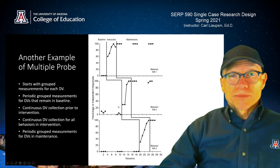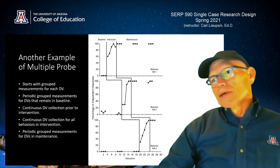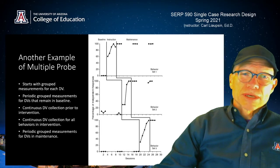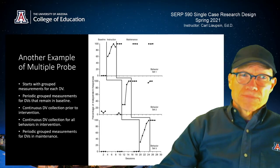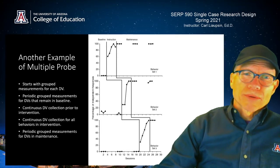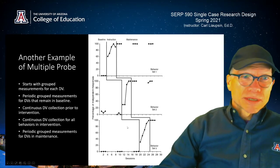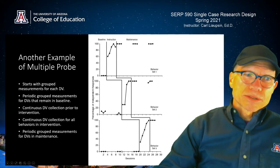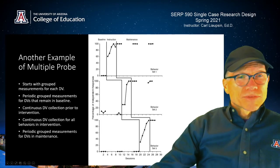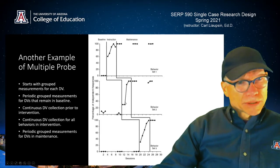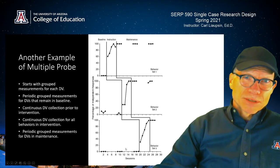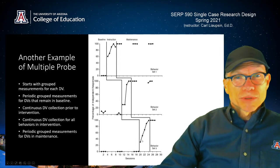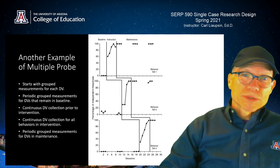Then they took a week off so the client wouldn't learn the skill in between — or get frustrated. If you're repeatedly collecting data on something someone can't do, they're likely to get frustrated and develop some inappropriate behaviors. So multiple probe is a great way to keep from frustrating clients. They grouped some initial probes, took a break, grouped probes again, and once they saw an experimental effect for the first client, they started with the next one — keeping the third in baseline — until they had an effect there too, then implemented with the third.